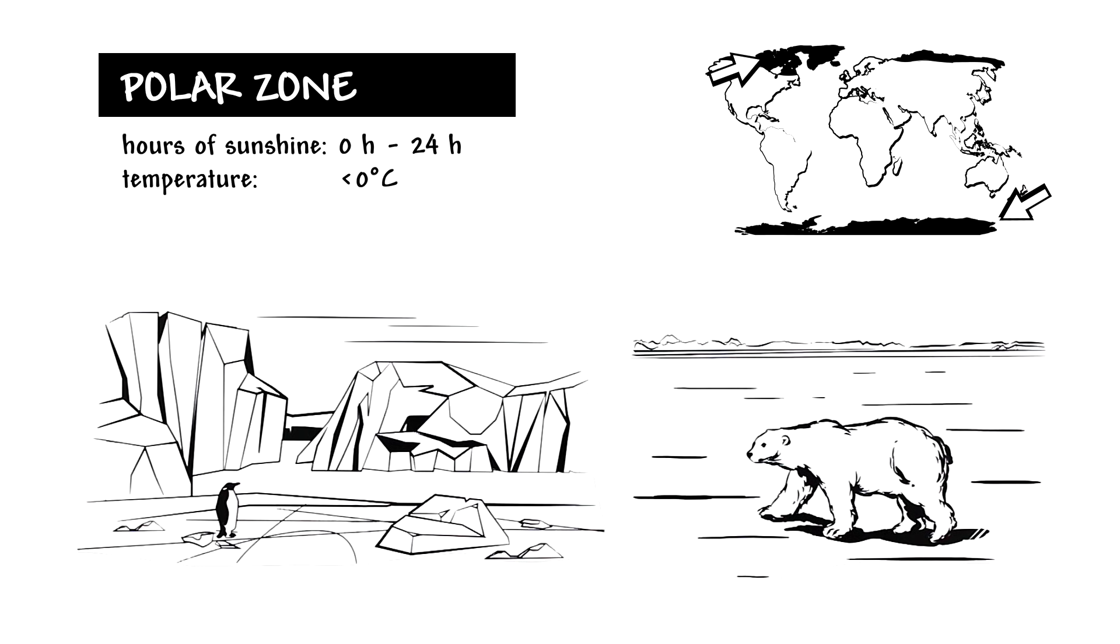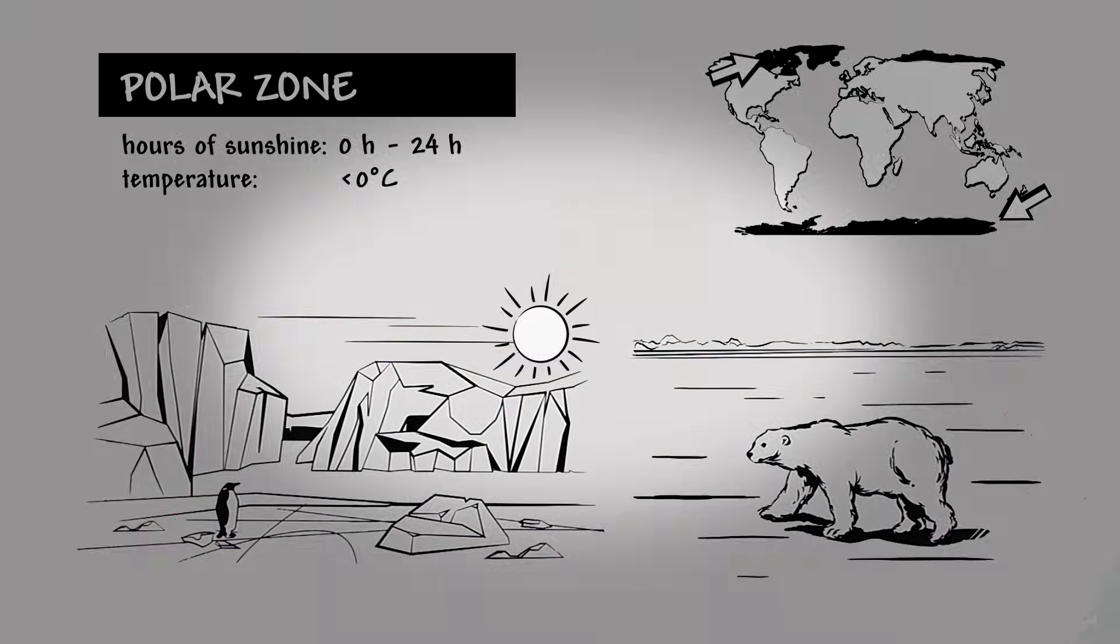Almost no plants grow in the polar zones, because the conditions are far too poor. In the summer, it stays light throughout the day and night, while in the winter, it remains dark for almost half a year. Temperatures rarely exceed zero degrees Celsius.